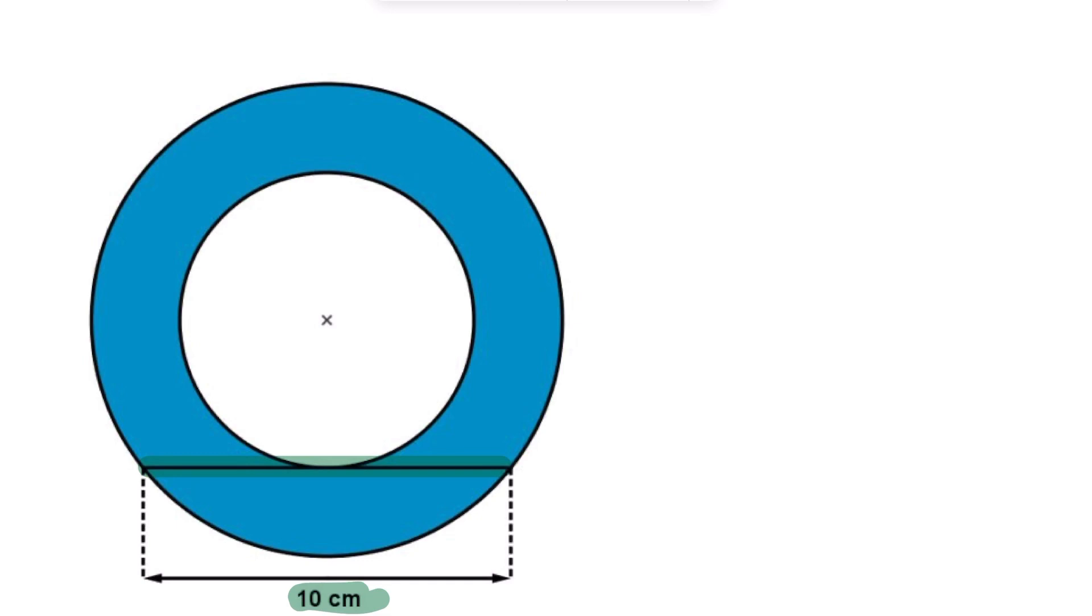First thing we want to take a look at is we know the following property. If you create a perpendicular line, in this case here that goes from the center of this circle to the actual chord that we have here, that is going to meet at 90 degrees because it is a perpendicular line and that'll actually bisect the chord.